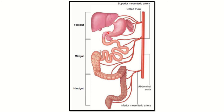The midgut starts from the second part of the duodenum, from the major duodenal papilla. It includes the small intestine — jejunum and ileum — then the appendix, ascending colon, and the right two-thirds of the transverse colon. So the midgut derivatives are: distal duodenum, jejunum, ileum, appendix, ascending colon, and right two-thirds of the transverse colon.